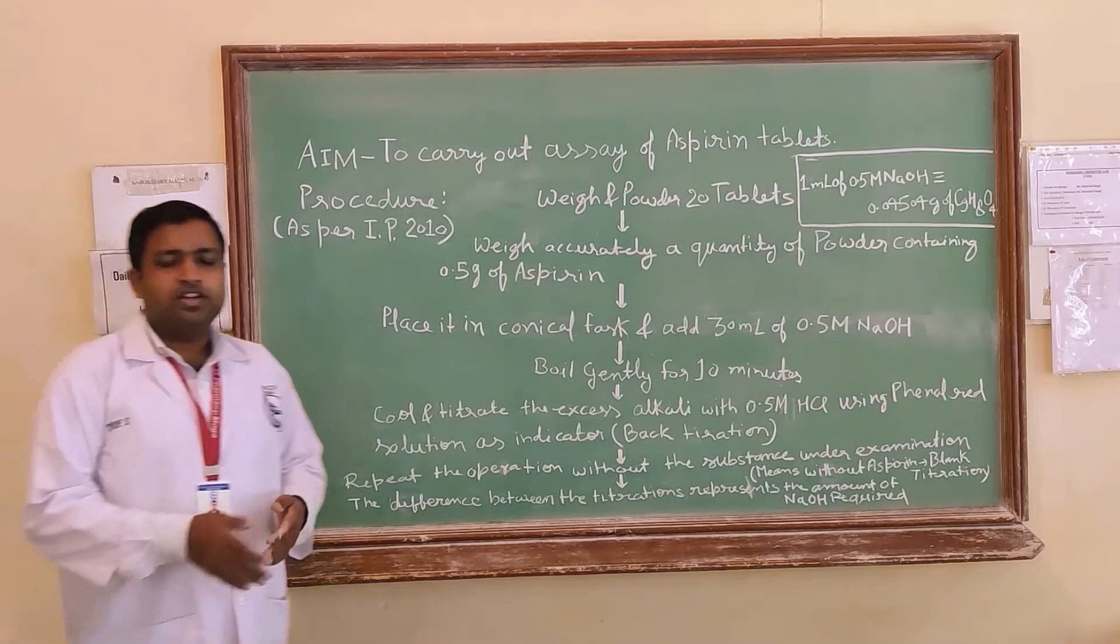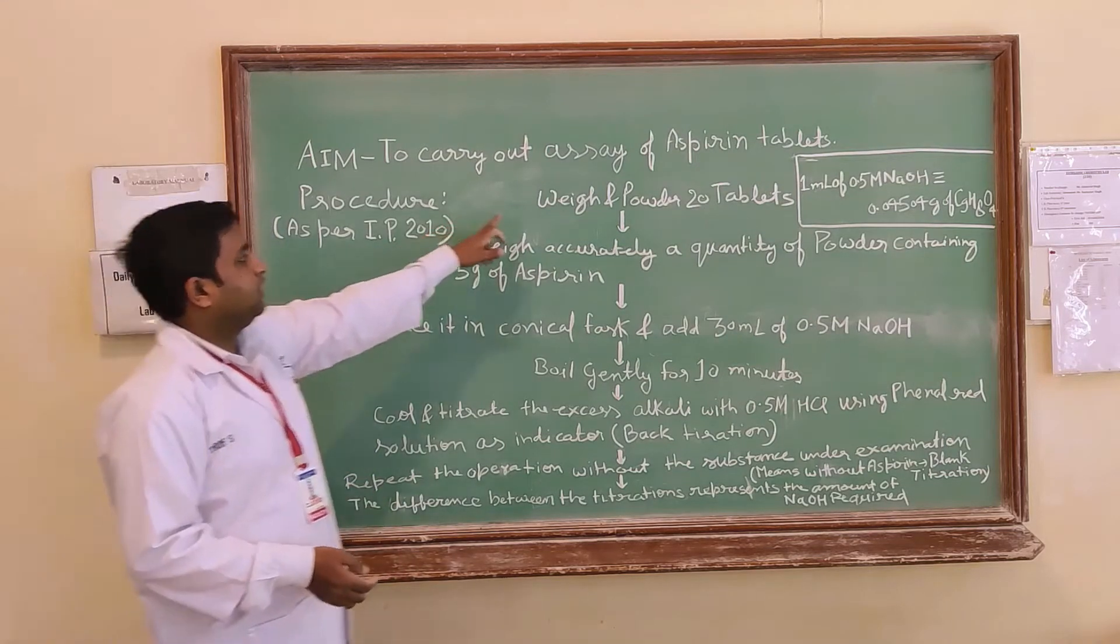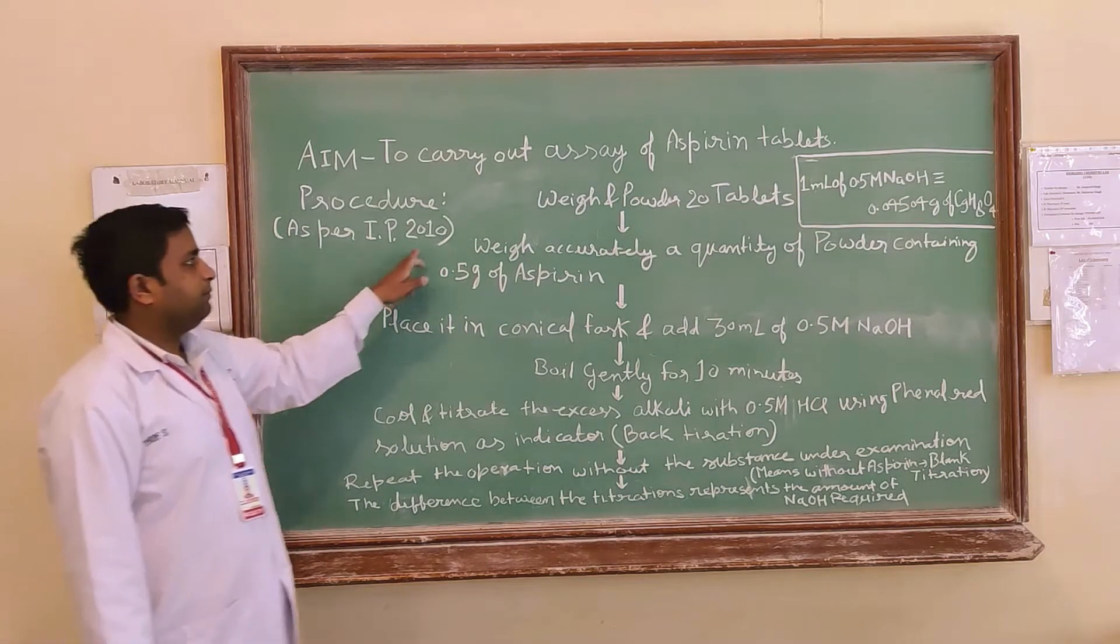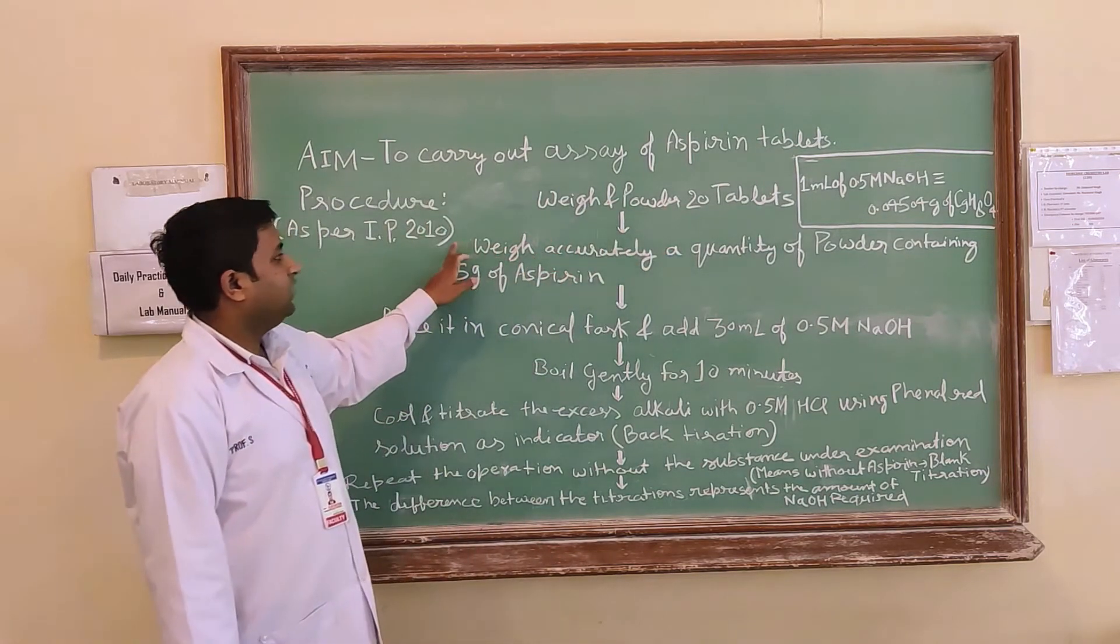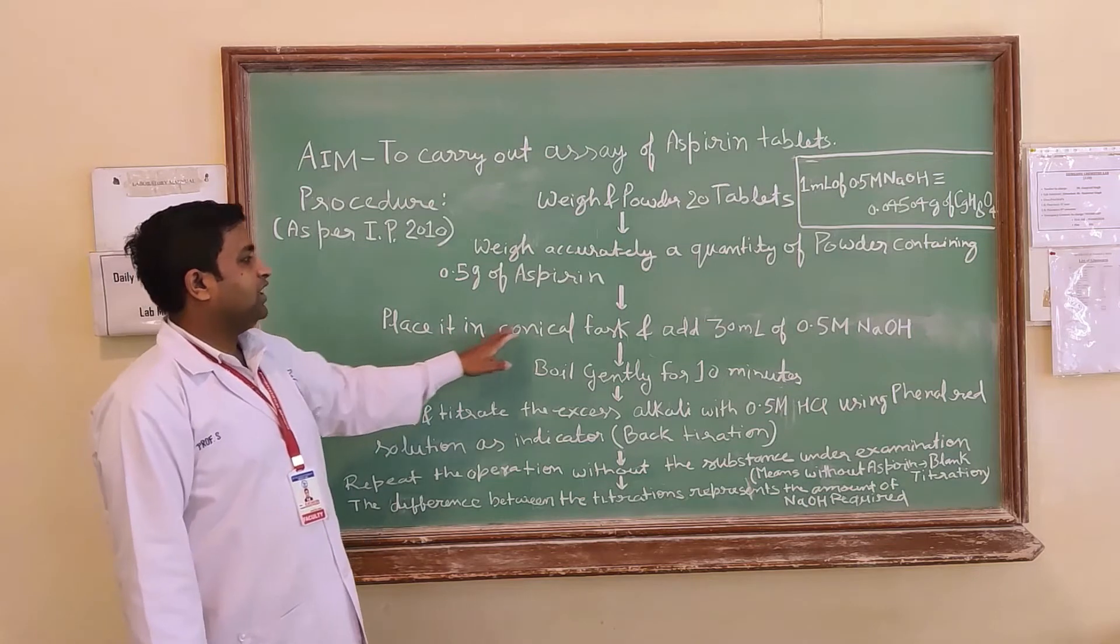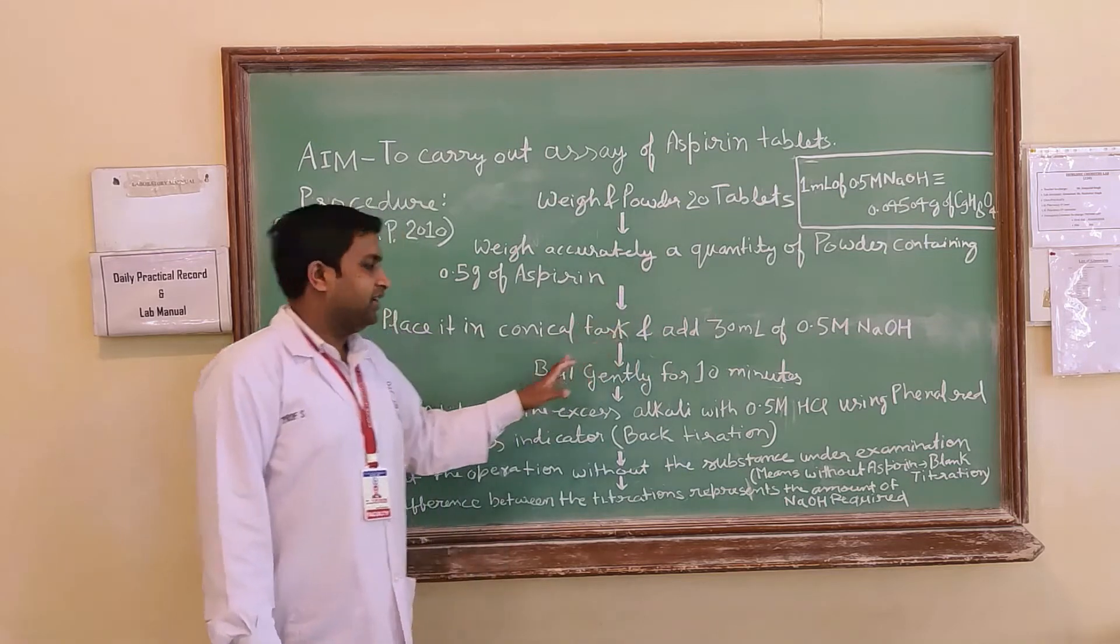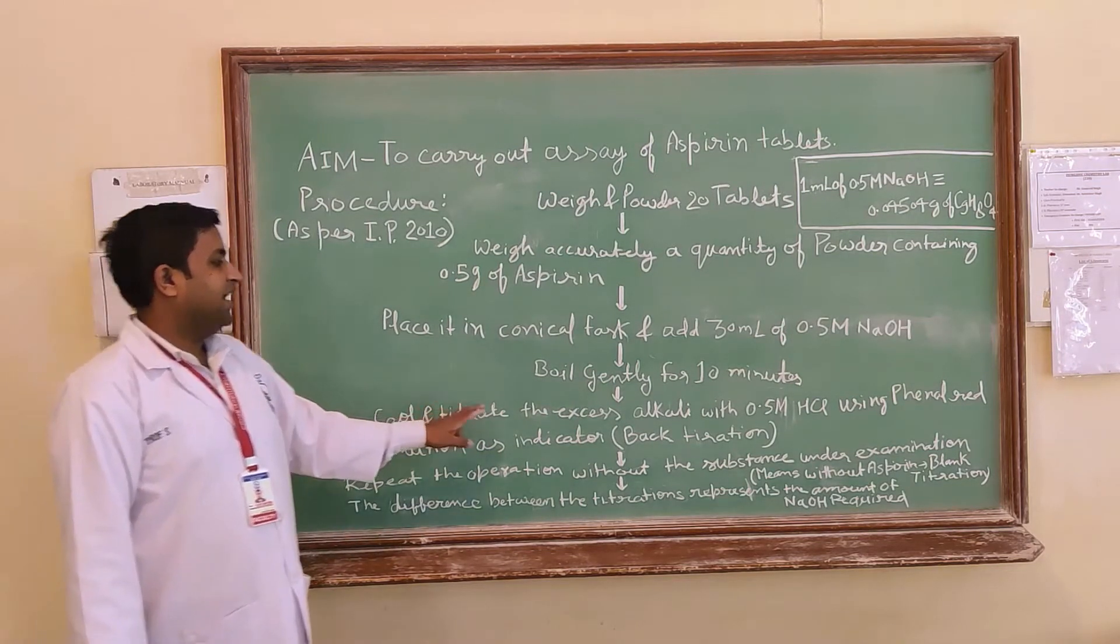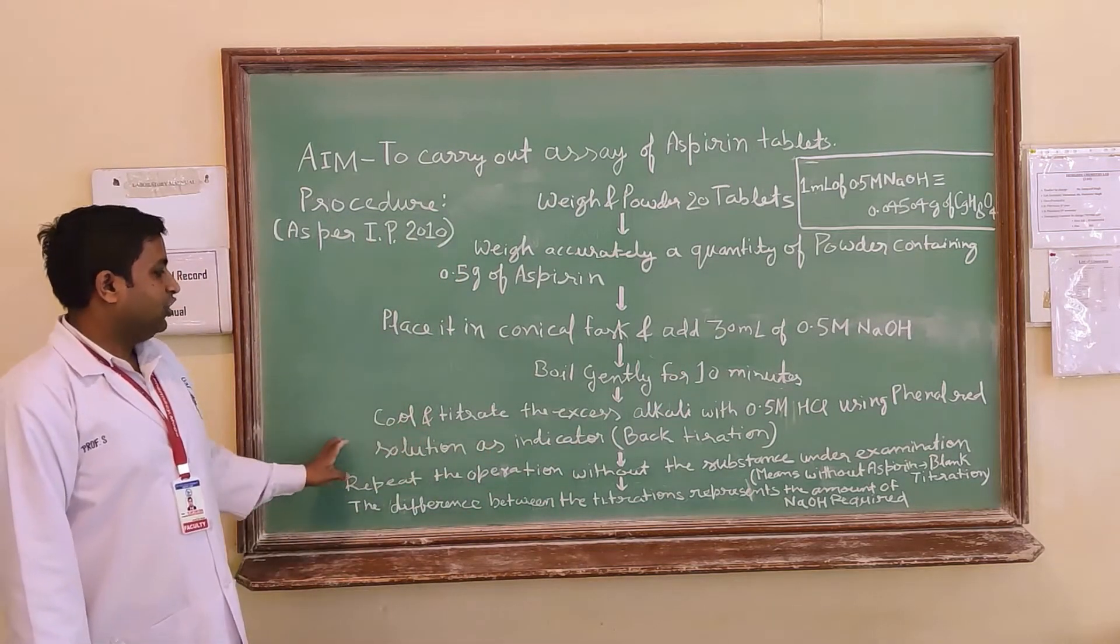The next part is how will you perform the assay procedure. For the assay procedure according to IP 2010, firstly you have to weigh and powder 20 tablets of aspirin. Then weigh accurately a quantity of 0.5 g of aspirin. Place it in conical flask and add 20 ml of 0.5 molar NaOH which you have prepared. Then boil gently for 10 minutes and cool and titrate the excess of alkali with 0.5 molar HCl using phenol red solution as indicator.